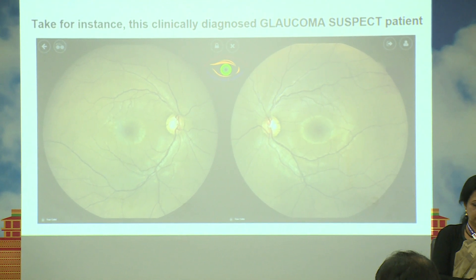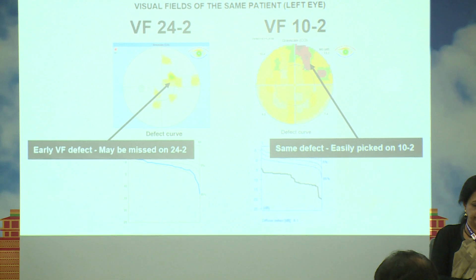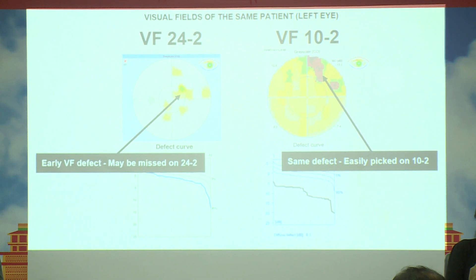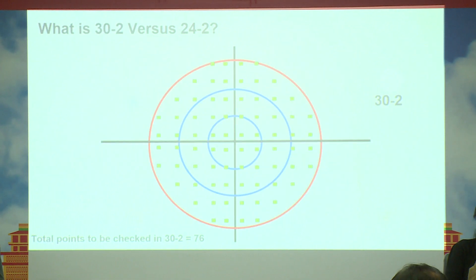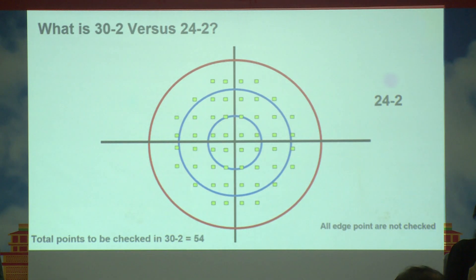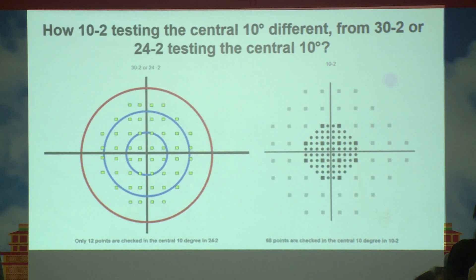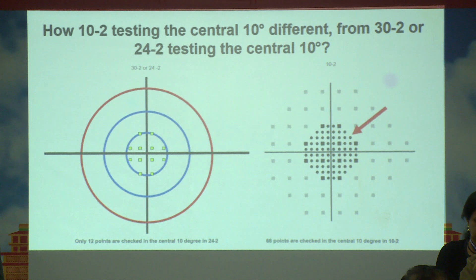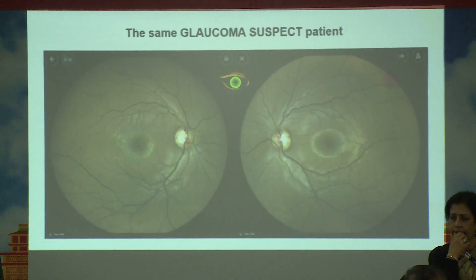Take for example this patient, a clinically diagnosed glaucoma suspect. An early visual field defect may actually be missed on 24-2, whereas the same defect can be easily picked up on 10-2, as seen on the right-hand side. In 30-2 there are 76 points and in 24-2 there are 54 points, but only 12 points are checked within the central 10 degrees, whereas in the 10-2 field, 68 points are being checked — as shown by the red arrow on the right-hand side.